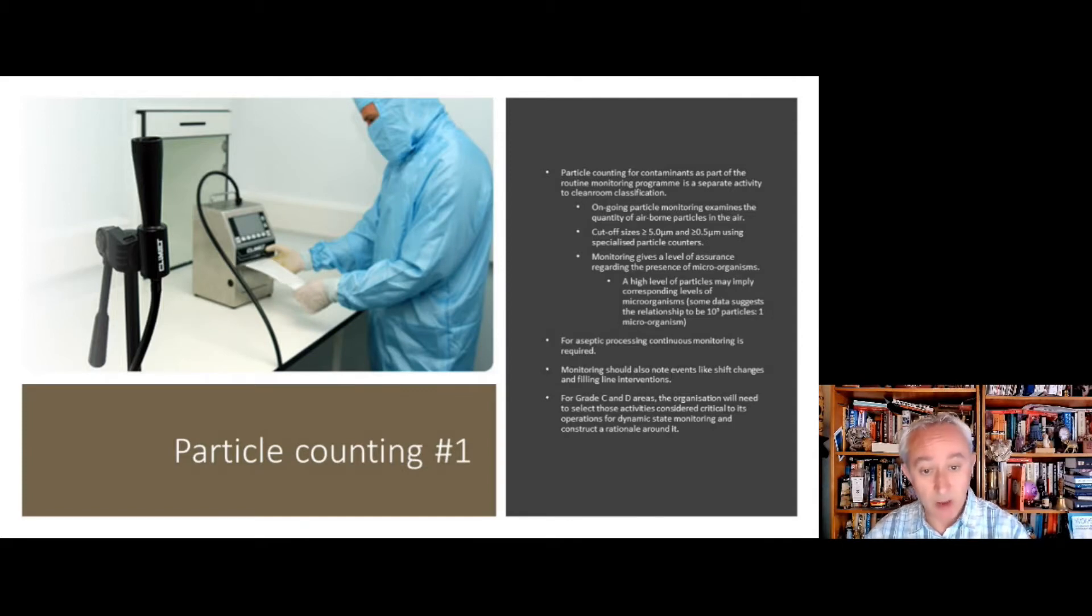It's a requirement to look for particles of two cutoff sizes: greater than or equal to 0.5 micron and greater than or equal to 5 micron. These are cutoff sizes, not discrete particles, so the particle counter will be running in continuous sampling mode.